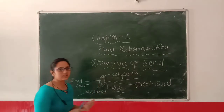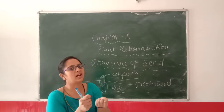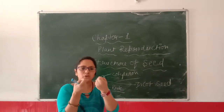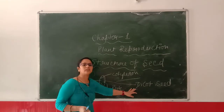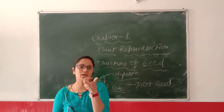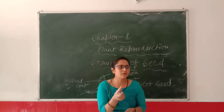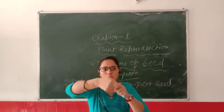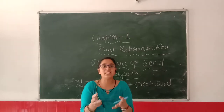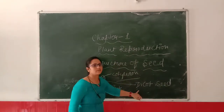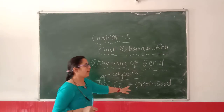Taking the example of rajma, when you peel out the seed cover from the rajma, you can break it into two parts. These two parts are two cotyledons. This is a dicot type of seed — rajma is a dicot type of seed. Peas are also a dicot type of seed. If you peel out the outer cover of peas at home, you can see there are two parts, and these two parts are cotyledons. These are called dicot seeds.